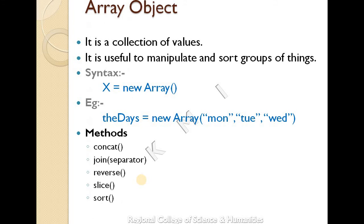The third built-in object is the array object. It is a collection of values and is useful to manipulate or sort a group of things. You can use it for homogenous data. The syntax is: x = new Array(). For example: days = new Array('Monday', 'Tuesday', 'Wednesday', 'Thursday', 'Friday', 'Saturday', 'Sunday'). Array objects have five types of methods: concat, join, reverse, slice, and sort.